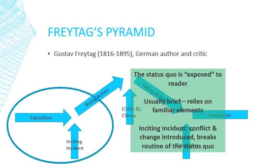It begins with the exposition — a more complicated word for beginning — where the status quo is exposed. We see the characters, their normal lives, and the situation of the world we're entering. It's usually very brief, relying on familiar elements and stereotypes so we can be brought into the world and understand what's happening. The status quo is then broken by an inciting incident — some conflict or change that's introduced that breaks the routine. This could be a positive or negative incident, but something happens to incite a change.